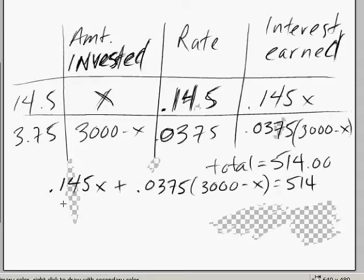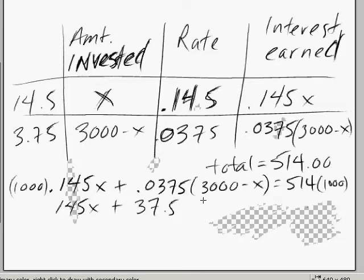Now we want to get rid of these decimals. And the easiest way to do that is by multiplying by 1,000. That should do it. So we're going to multiply both sides of the equation by 1,000. And so that gets rid of our decimal points here. And 145x plus 37.5 times 3,000 minus x equals 514,000.